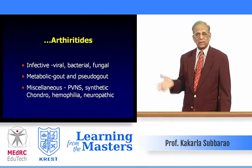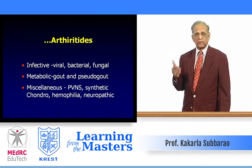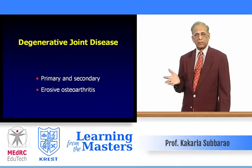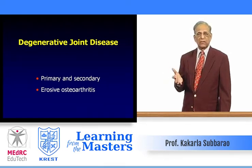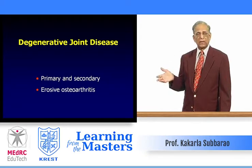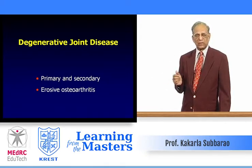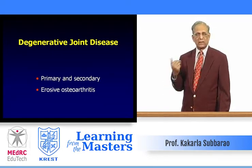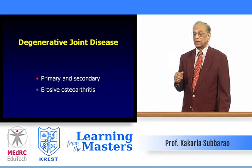Degenerative joint disease can be primary or secondary. Primary occurs without any identifiable cause — some say it is hereditary. Secondary degenerative arthritis occurs after infection, after treated infection, or after trauma. For example, a fracture of the lower end of the radius may eventually result in wrist arthritis. Erosive arthritis in the primary form is called primary inflammatory erosive osteoarthritis.